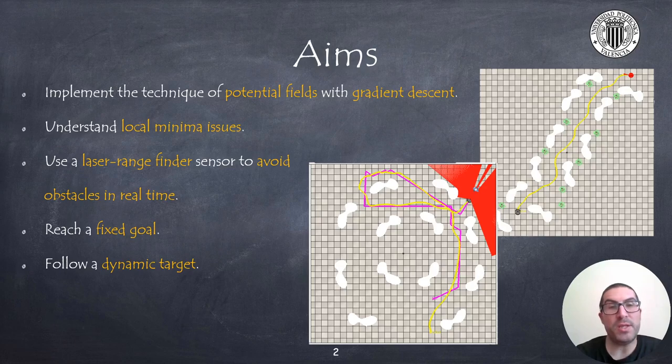In addition to this I will also show some cases where the technique fails to accomplish its task due to local minima issues. The idea is to use a laser range finder sensor to avoid obstacles in real time. I will show how to reach a fixed goal and also how to follow a dynamic target. Both cases implemented exactly the same technique.